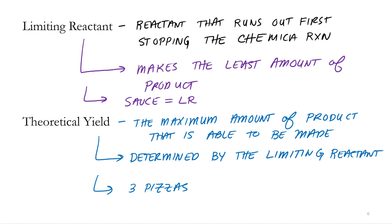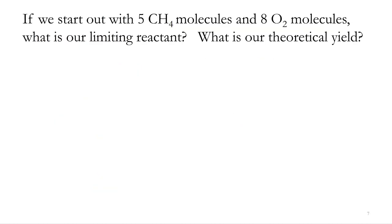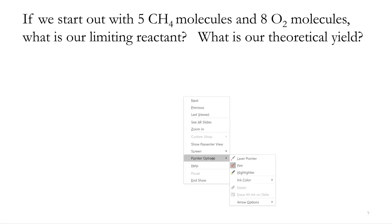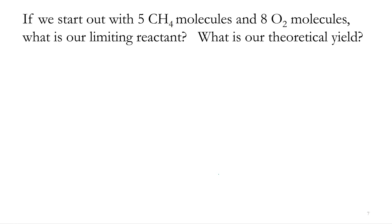Just like we did with the pizza example as an analogy, we can put these ideas and calculations into use for an actual chemical reaction. Let's say we start out with five molecules of methane, CH4, and eight molecules of oxygen. What is our limiting reactant? What is our theoretical yield? Moles is just a collection term for atoms or molecules, so we could talk about this at the molecular level as well. To do a stoichiometric calculation to determine the limiting reactant or theoretical yield, we need to write out our balanced chemical equation.